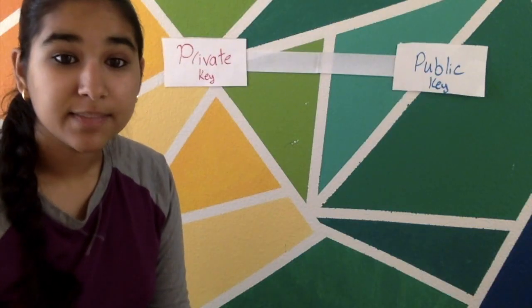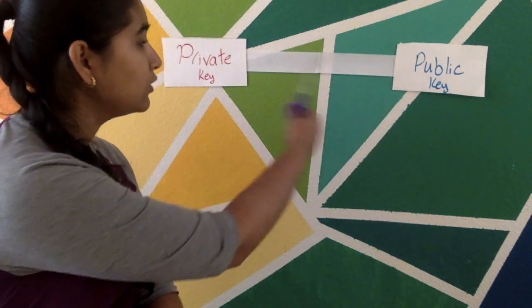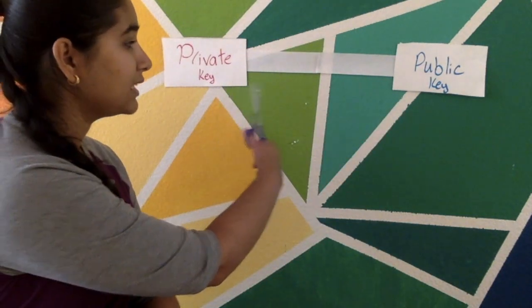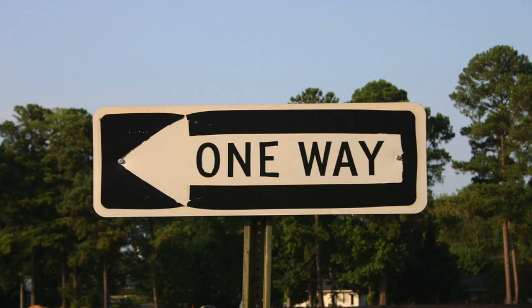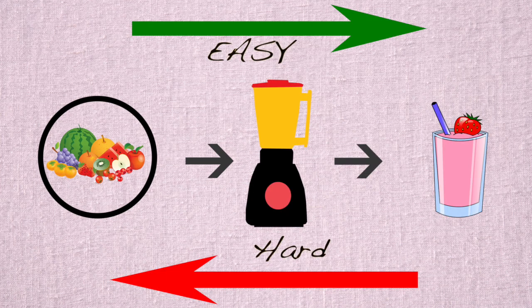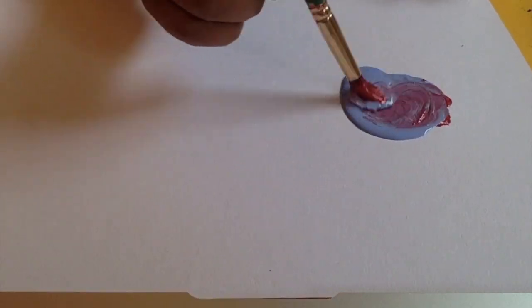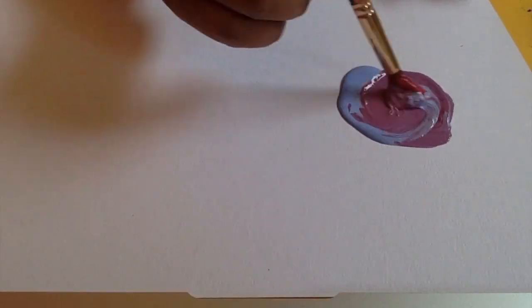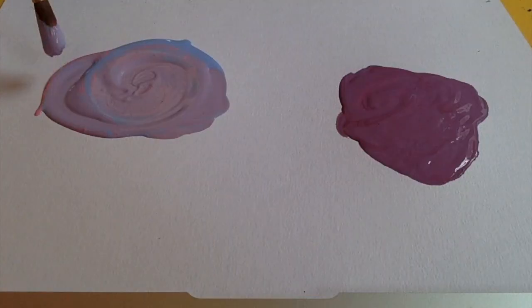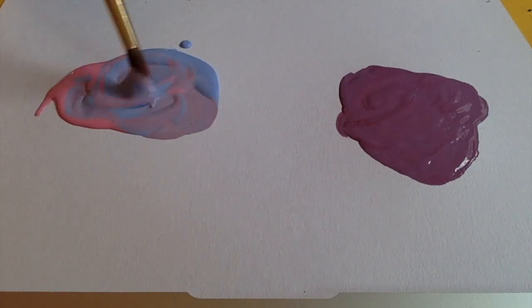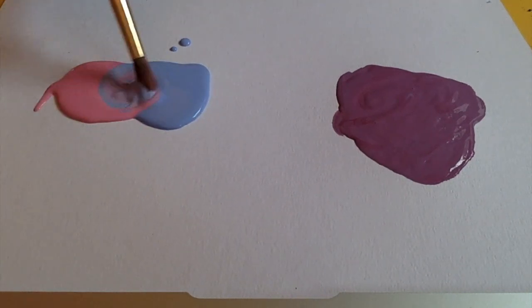The trick to this method is that if you know my public key, you can't find my private key. But how? Introducing the one-way function, a process which is easy to do but extremely difficult, if not impossible, to undo. I can mix two colors together and get a third color, which is a simple process. But if I show you this mixed color, can you find the original colors? Probably not.